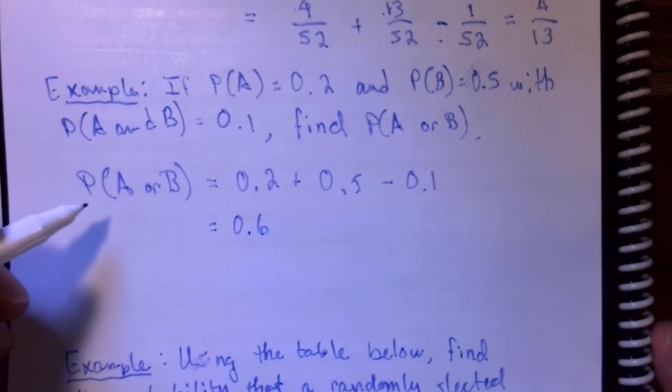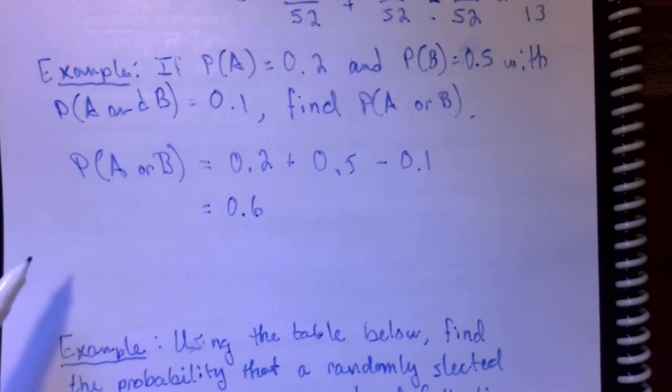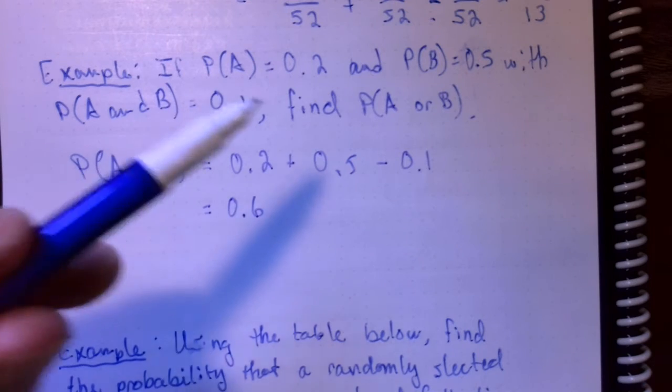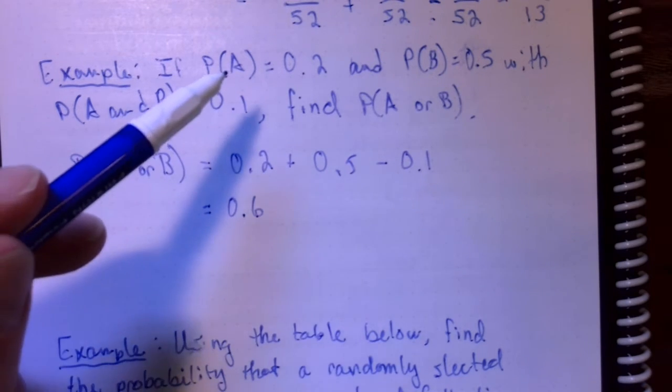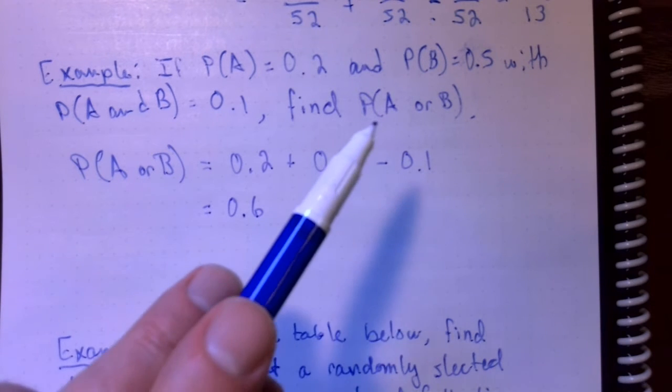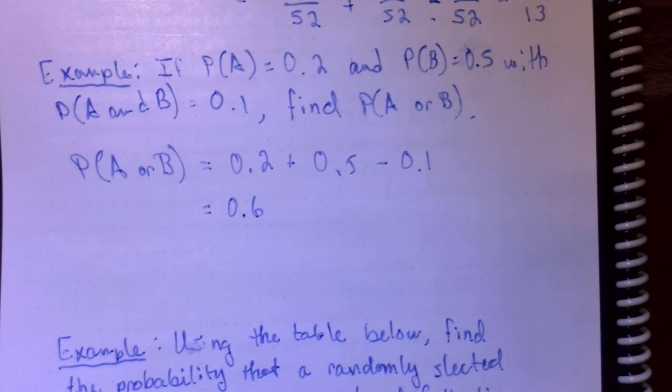That formula we discussed earlier in the video gives us a way to relate all four quantities. It relates P of A, P of B, P of A and B, and P of A or B. So, if you know any three of them, you can always figure out the missing one.